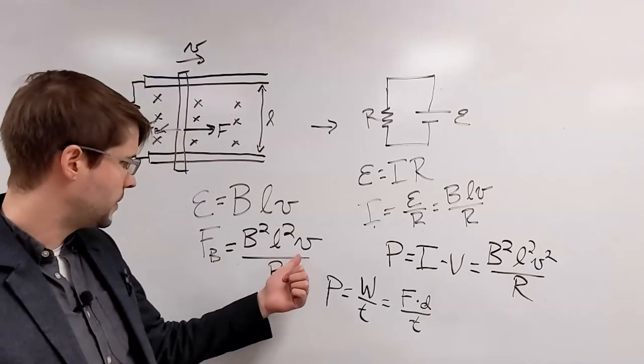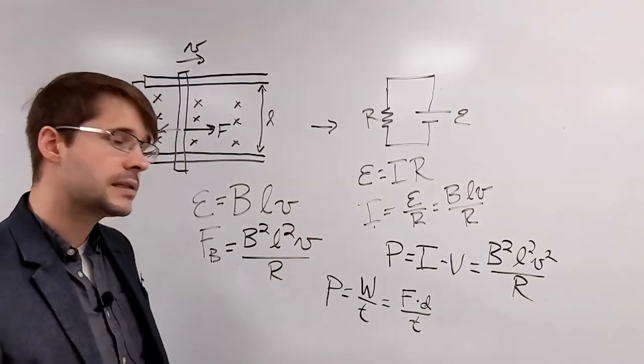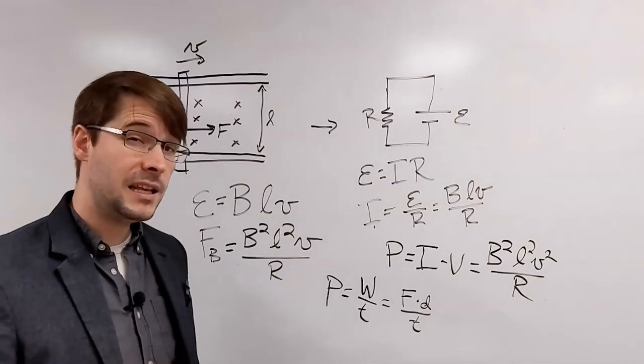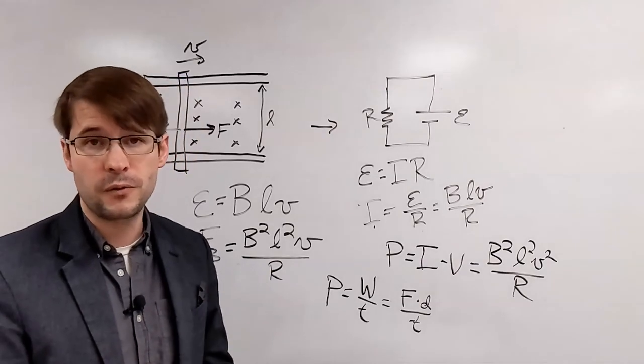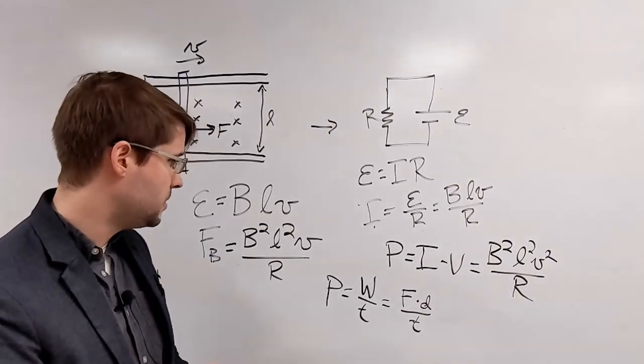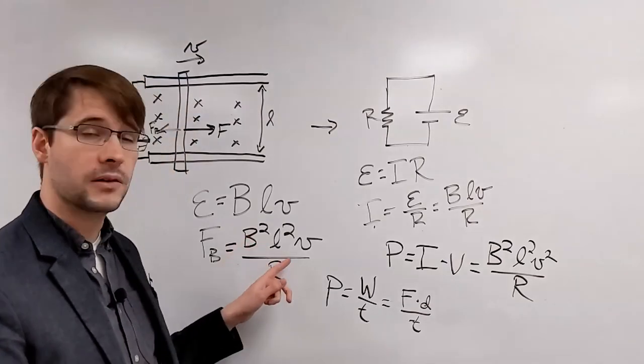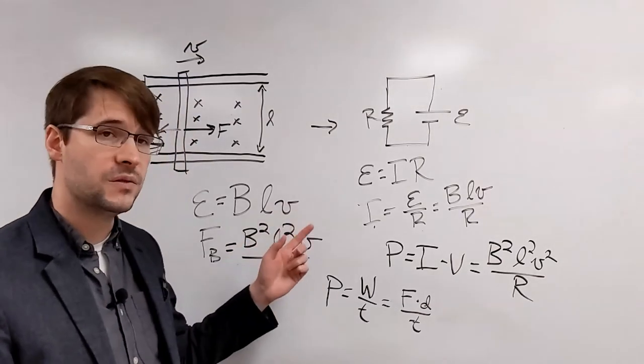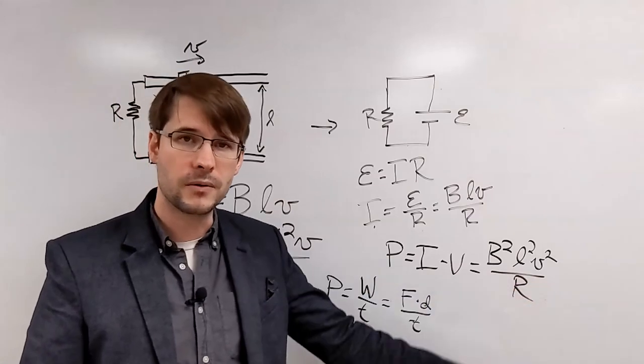So we can take the force here that we have already, multiply by the velocity, and we get that the input power due to the force being exerted on the bar is exactly equal to B squared L squared V over R times V, which is the same thing that we've got right here.